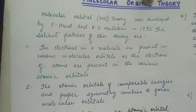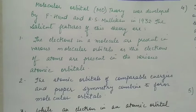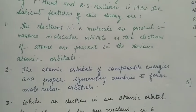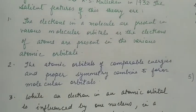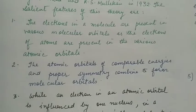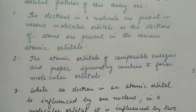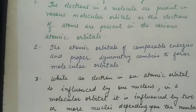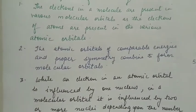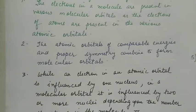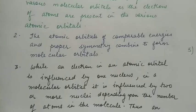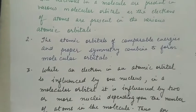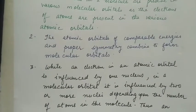The salient features of the theory are: electrons in a molecule are present in various molecular orbitals, just as electrons of atoms are present in various atomic orbitals. The atomic orbitals of comparable energies and proper symmetry combine to form molecular orbitals.